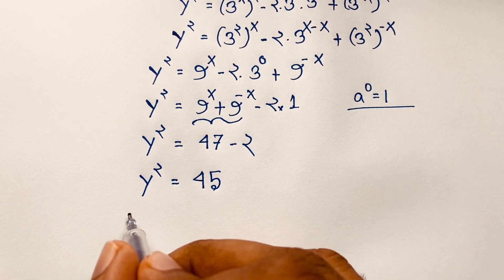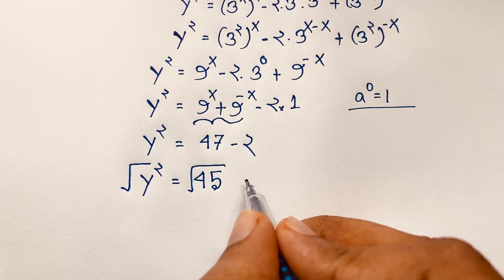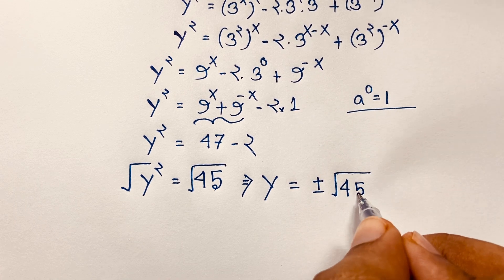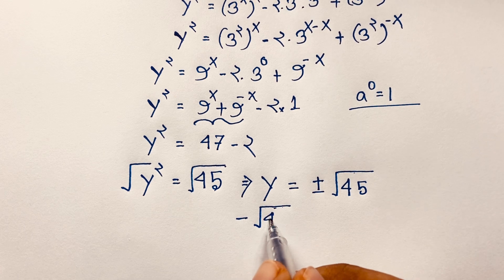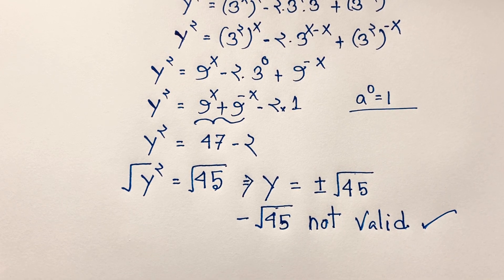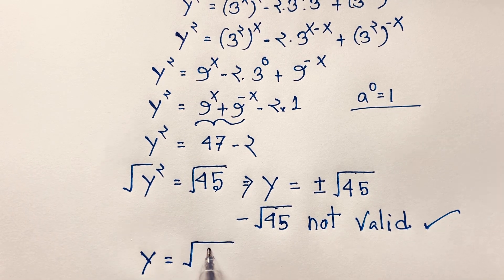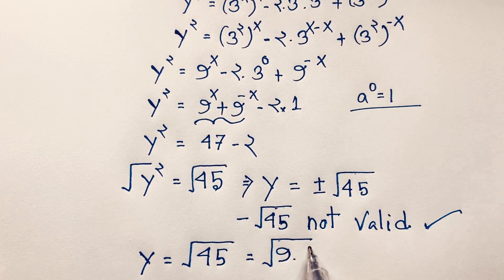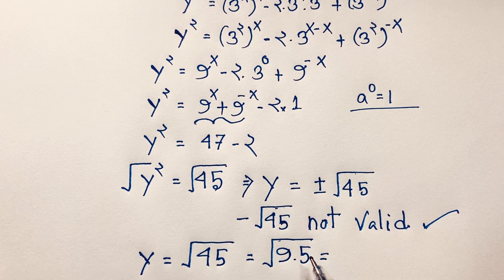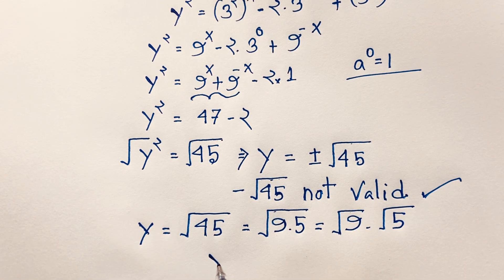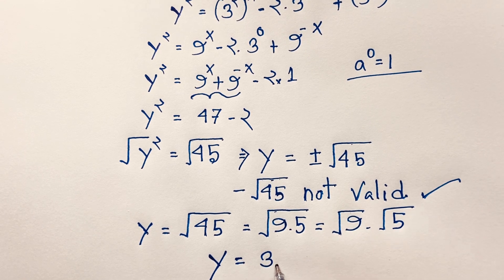Now if I use both side square root, we find y is equal to plus or minus square root of 45. But negative square root of 45 is not valid, so y equals positive square root of 45. If I evaluate this expression, it will be square root of 9 times 5, and since square root of ab equals square root of a times square root of b, this gives square root of 9 times square root of 5.